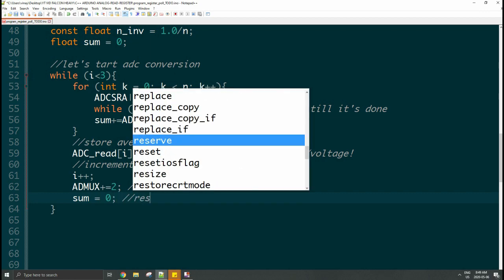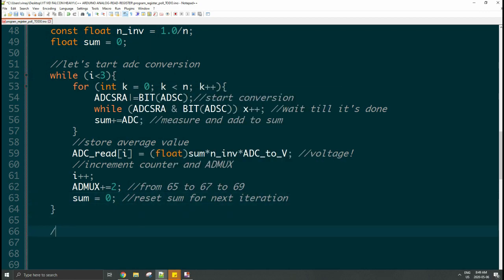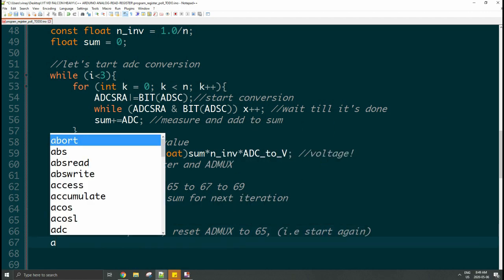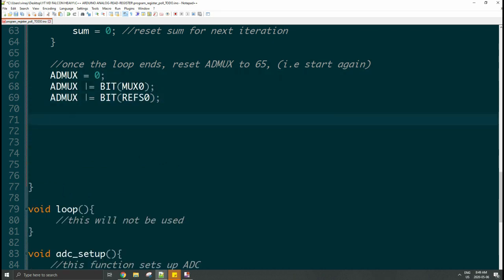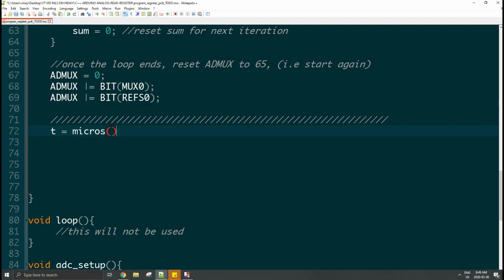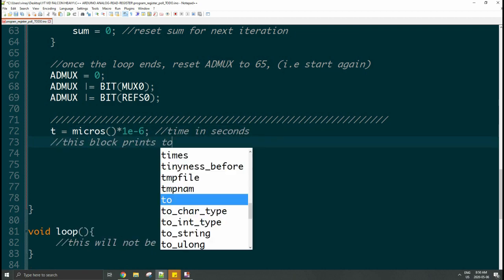Lastly, you reset sum and then you exit the loop. That's it for the conversion. When that's done, you have to reset ADMUX to 65 because that's your pin 1, so it'll start from pin 1 all over again. At the end, you can print out the results to the screen by using serial print, and then that's it.